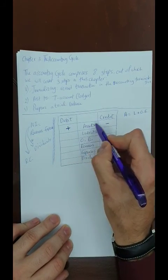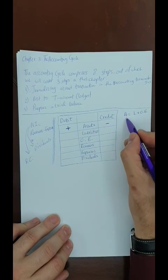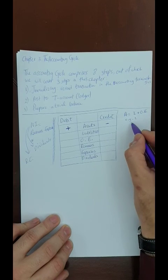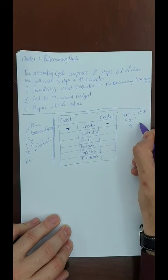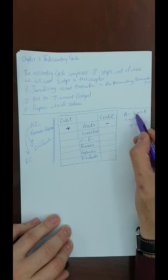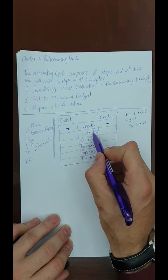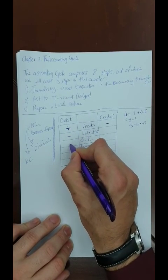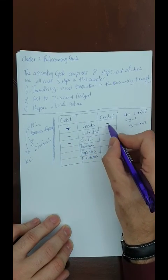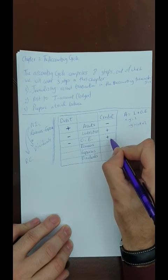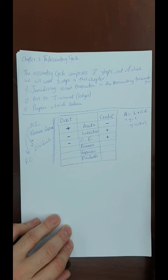If debit increases assets, then credit decreases assets. On the other side of the accounting equation — assets equal liabilities plus owner's equity — liabilities and owner's equity behave in the total opposite way. So debit causes a reduction in liabilities and owner's equity, and a credit causes an increase in liabilities and owner's equity. This follows from simple mathematical logic.